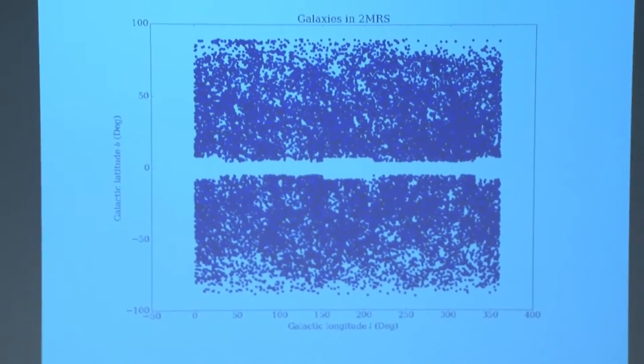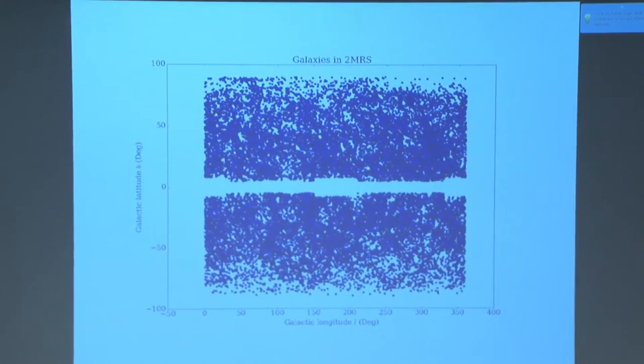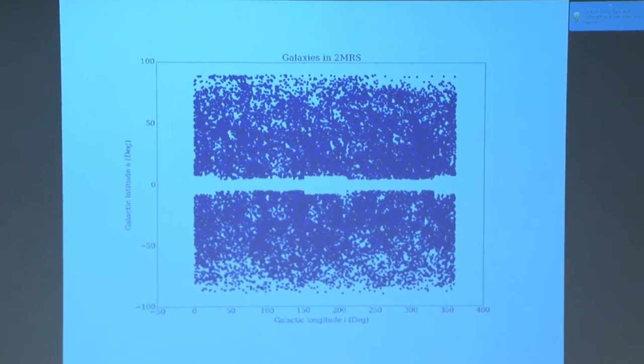If we sum that over a bunch of galaxies in the sky, we have a total relative velocity impacting the Milky Way. To do this we used the 2MASS redshift survey, which gives us coordinates in the sky and redshift values that we can convert into distance from our galaxy. We have positional data for galaxies all around us, and from this data we can compute the total relative velocity.